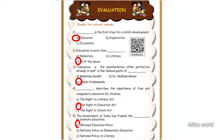Number 2: Education is more than blank. Options are Numeracy, Literacy, All of the Above. Education is more than all of the above. Answer is Option C — All of the Above.